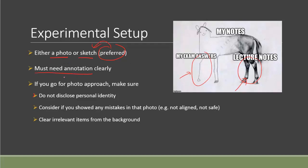Either way, you should include detailed annotation to point out which part is what. If you go for the photo approach, you should pay more attention to something like whether your personal identity like your face is disclosed, or it could be any mistakes that you accidentally show in a photo. Depending on your research question, maybe you need to align the instrument or do anything like align different apparatus. Maybe you didn't, then that will show a mistake. Or you may be showing a setup that is not safe enough.